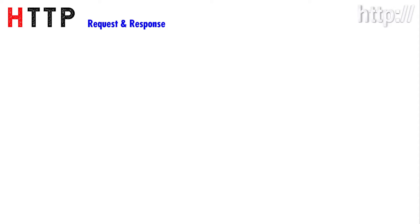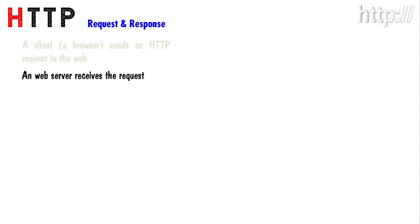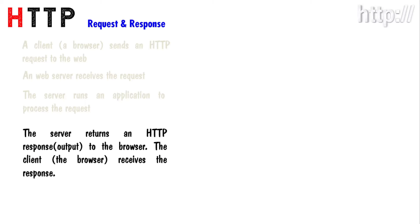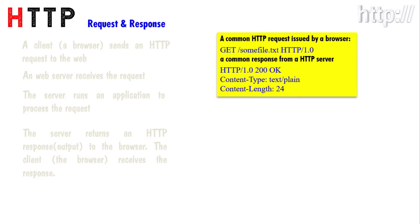In an HTTP request and response cycle: a client, that is a browser, sends an HTTP request to the web. A web server receives the request. The server runs an application to process the request. The server returns an HTTP response as output to the browser. The client, that is the browser, receives the response.